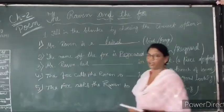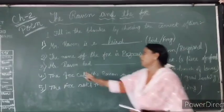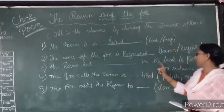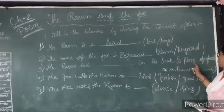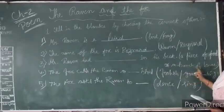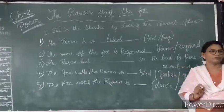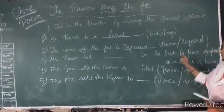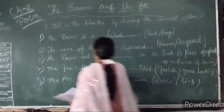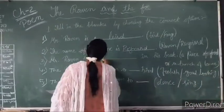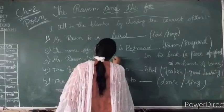Okay, now tell me the third one. Mr. Raven has blank in his beak: a piece of food or a branch of trees? A piece of food. Very good. So your answer will be a piece of food.